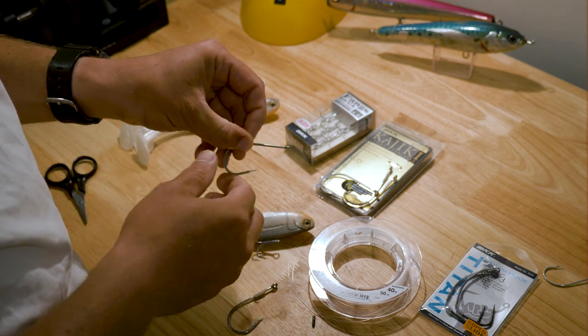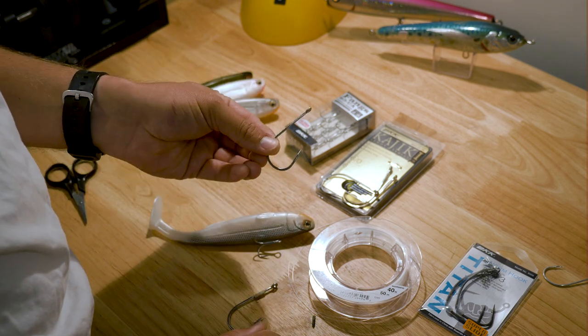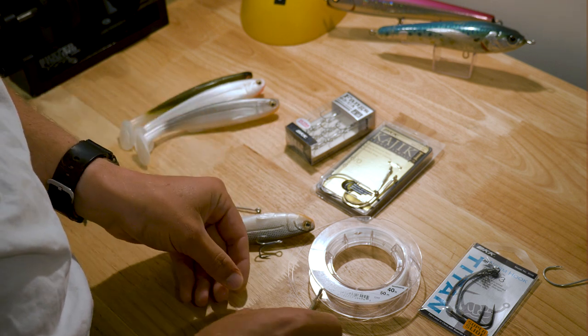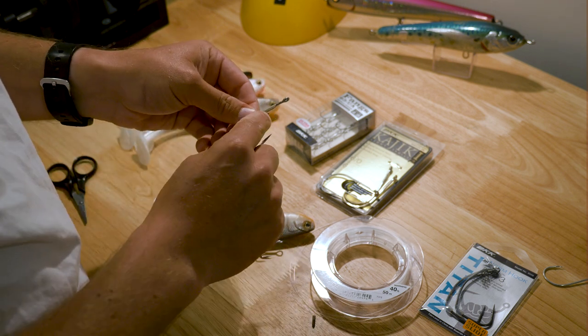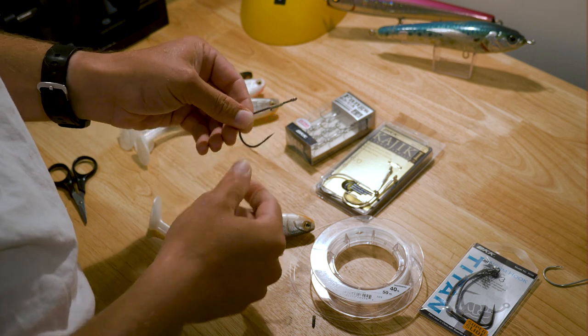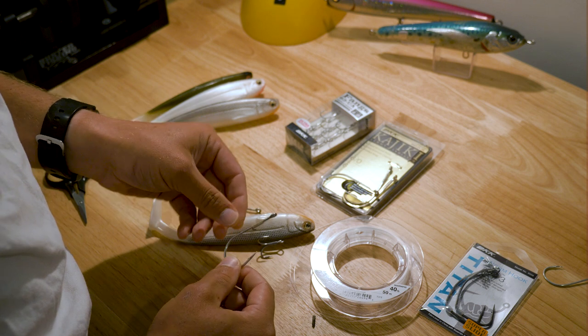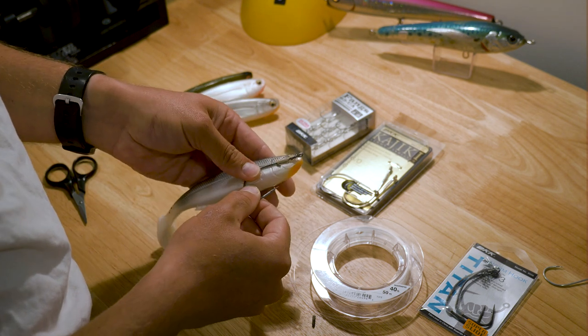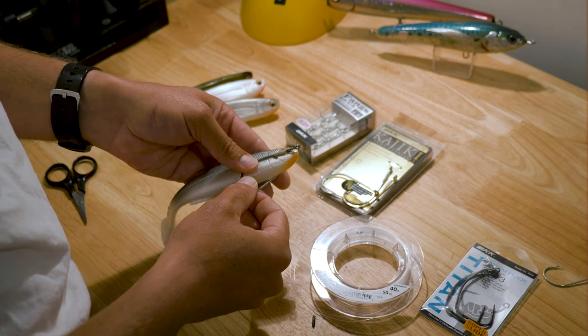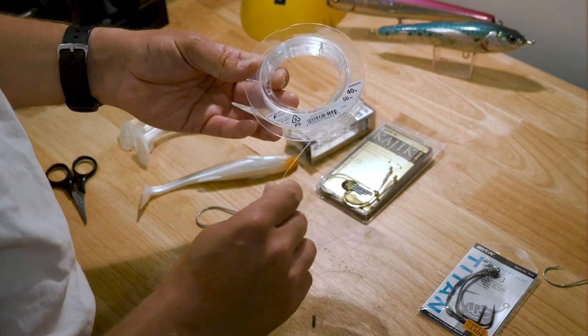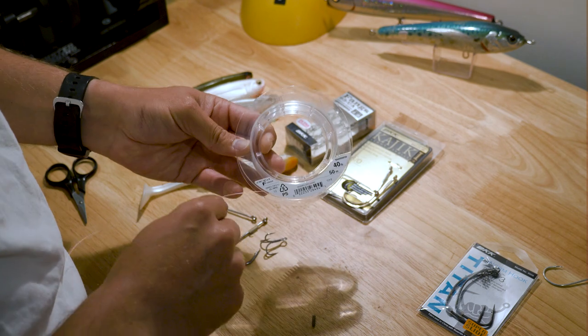What I like to do with these, that's just a plain Kajiki BKK there, but I actually like to bind on a little hook keeper there which you can probably just see. And then also use a little bit of super glue just to hold it in there nice and tight. And then I attach the stinger using 40 pound fluoro.